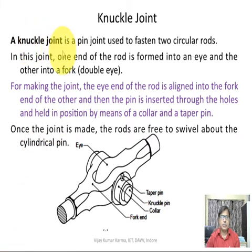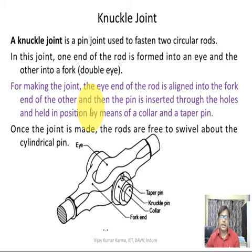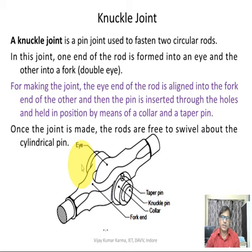A knuckle joint is a pin joint used to fasten two circular rods. In this joint, one end of the rod is formed into an eye and the other into a fork, so a double eye is formed. The eye end of the rod is aligned into the fork end of the other, and then the pin is inserted through the holes and held in position by means of a collar and a taper pin.